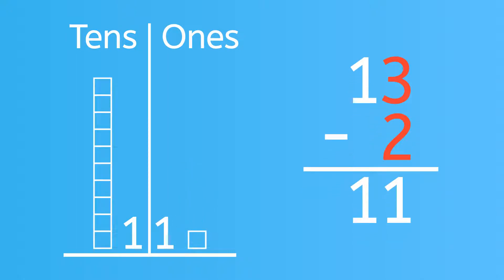In this problem, the 10 stays whole. This strategy works for math problems when you don't have to break the whole 10, regardless of what the two numbers are.